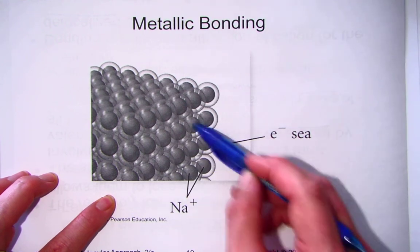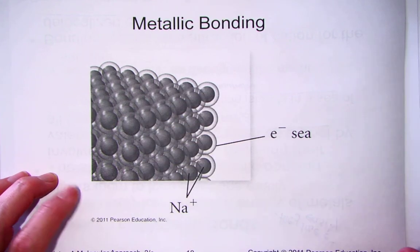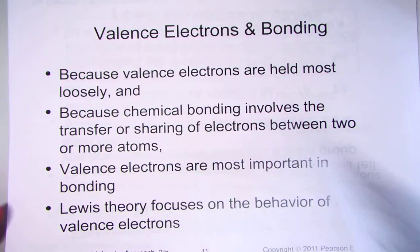But these electrons are free to move around any one of the nearby sodium atoms, creating this pool of an electron sea, making it a great conductor of electricity.